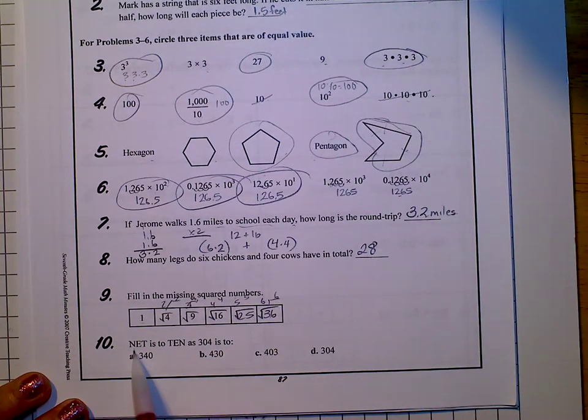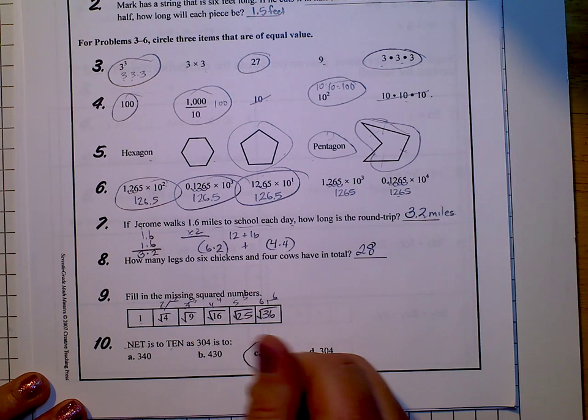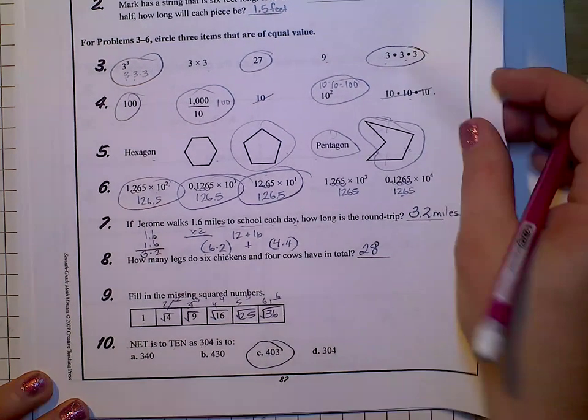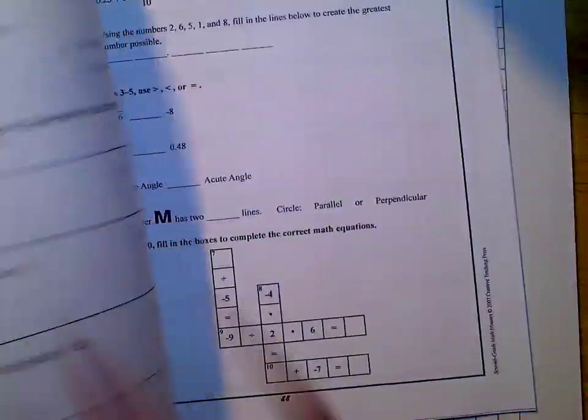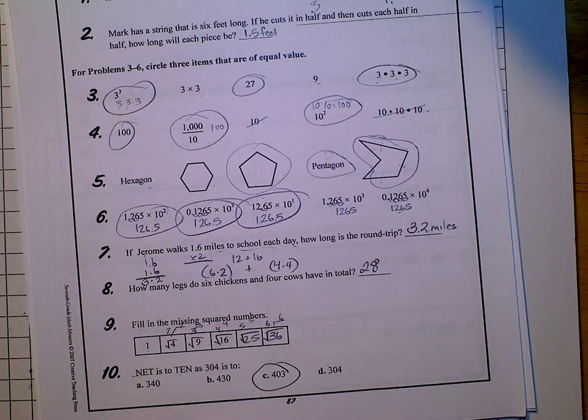Net is to ten. Oh, it's the flipped around version. As 340 is to 403. Che. All right. Got it. We'll do the next one in a minute. Ha ha ha, because they're minutes.